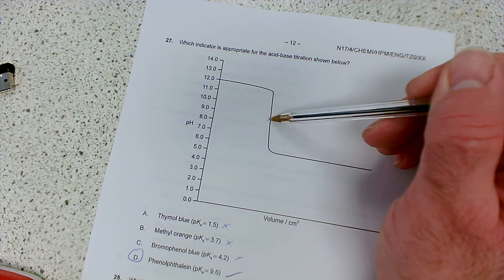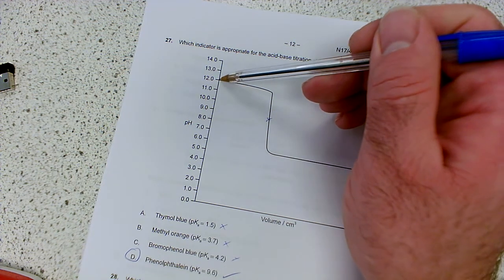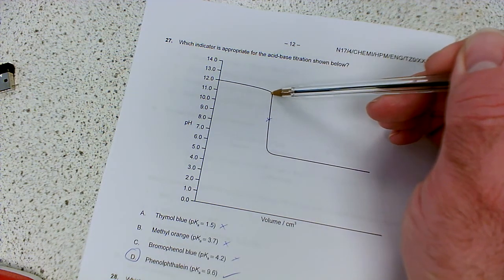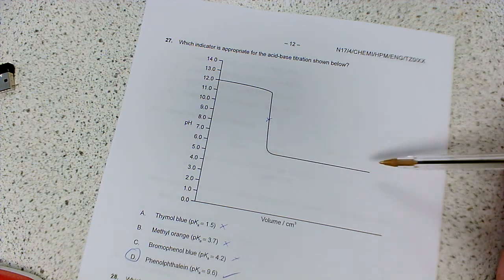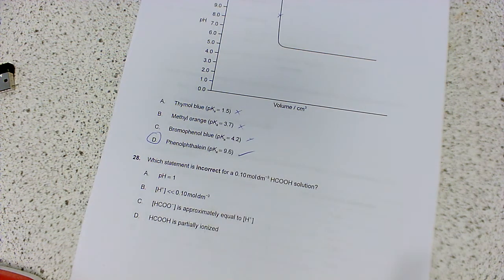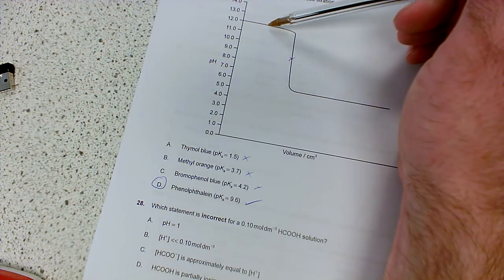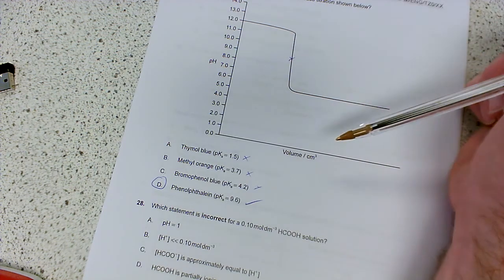Because the equivalence point, which is about halfway up the sharp drop, what we've got here, of course, is a strong base being neutralized by a weak acid. So that's why the pH doesn't drop particularly far. So yeah, we want phenolphthalein. And that would turn from pink to colorless. Because it's pink in alkali, colorless in acid.